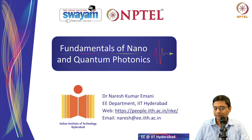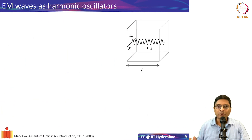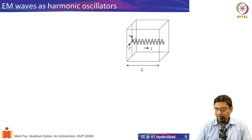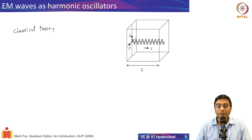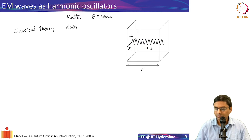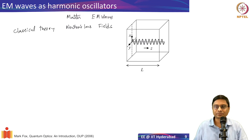Why do we want to introduce the quantum harmonic oscillator? If you think about the interaction of light with matter, there are various theories. The first one is the classical theory — the electromagnetic treatment of light that has been around for centuries. In classical theory, matter and EM waves are both treated classically: matter by Newtonian mechanics and EM waves as fields.